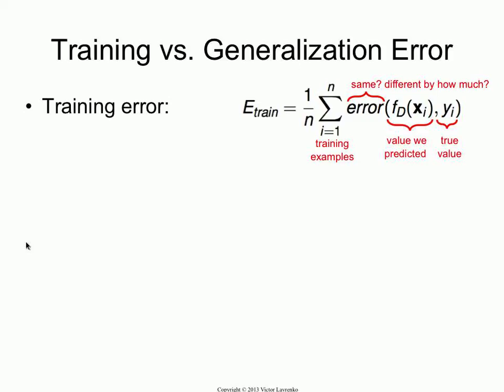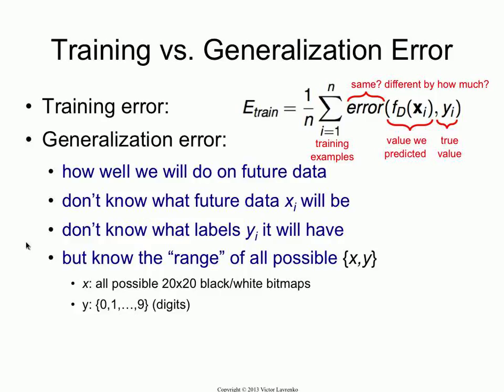There are lots of ways to define the error function, and we'll talk about some of them later in the lecture. But in general, just think of this as a function that is very, very small when these things are equal or almost equal, and it's large when they are different from each other in a significant way. So that's the training error — you compute the error for each point, and then you average it over your whole data set.